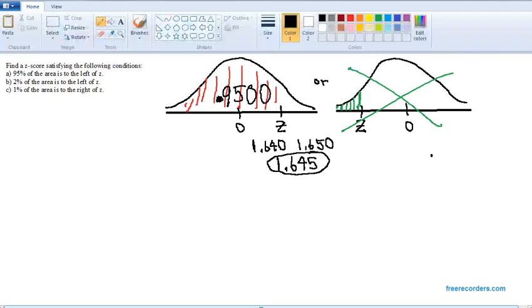Now, in part B, it's asking us to find a z-score so that 2% of the area is to the left of z. Whenever the percentage to the left is more than 50%, your z is going to be positive to the right of 0. Whenever your z is less than 50% to the left, your z-score is going to be negative.